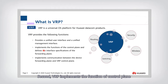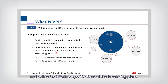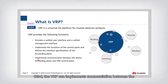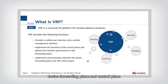Second, VRP can implement the functions of the control plane and defines the interface specifications of the forwarding plane. Third, VRP can implement communication between the device forwarding plane and control plane, providing the interface between these two layers.